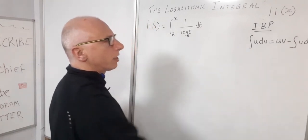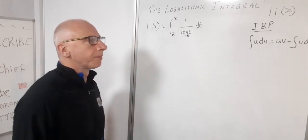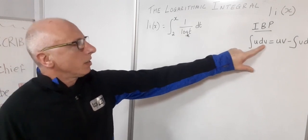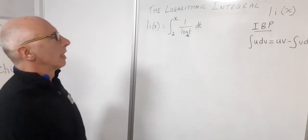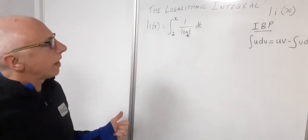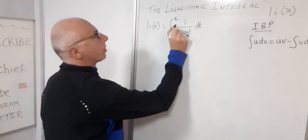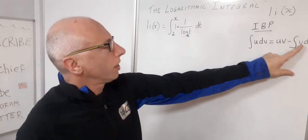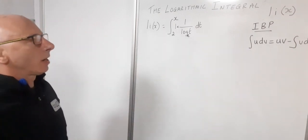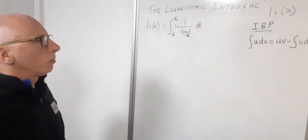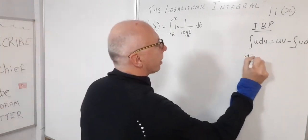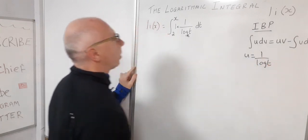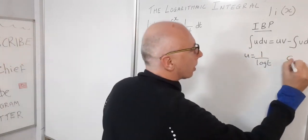The dv and du are derivatives, and u and v are the functions. We need to decide what to assign as u and dv. We can find the derivative of 1/log(t), but there's nothing else to use as dv, so we multiply by 1 out front. That way we let u equal 1/log(t) and assign dv to the 1, since we know we can integrate that.